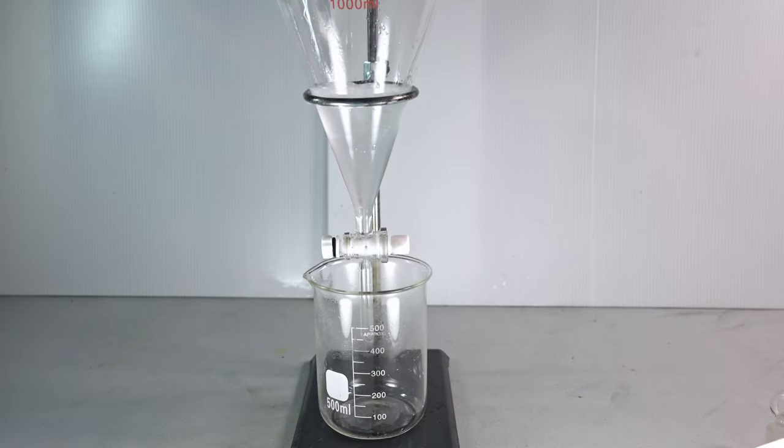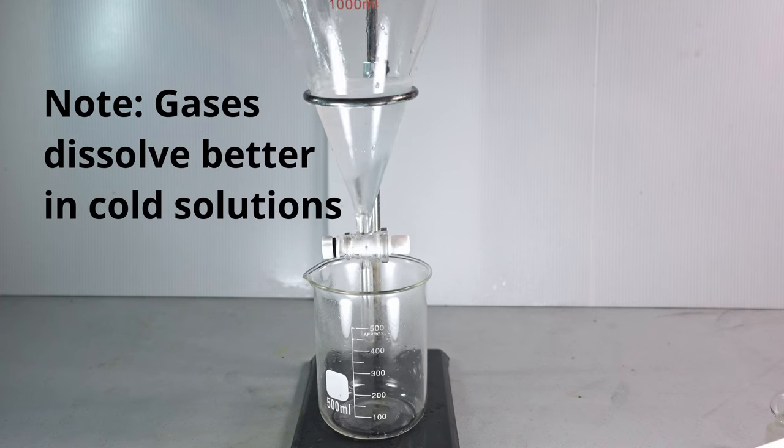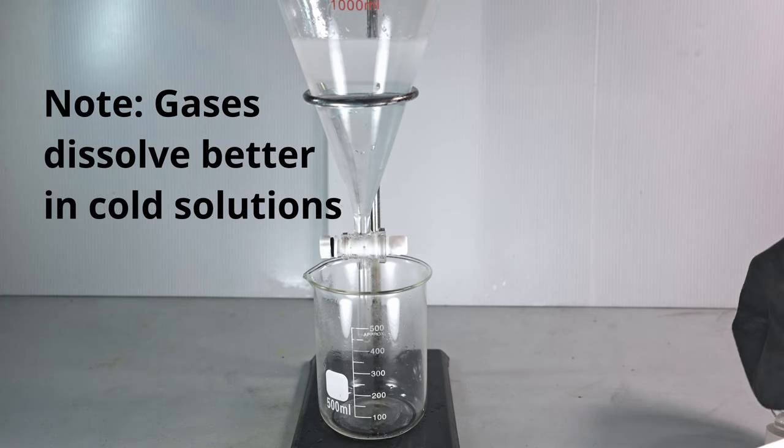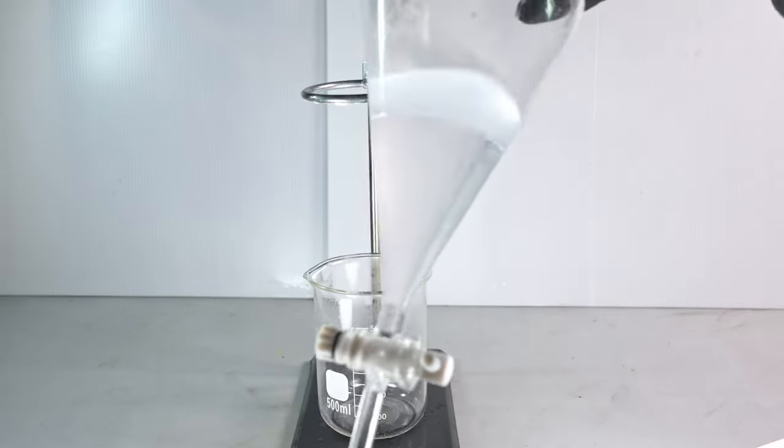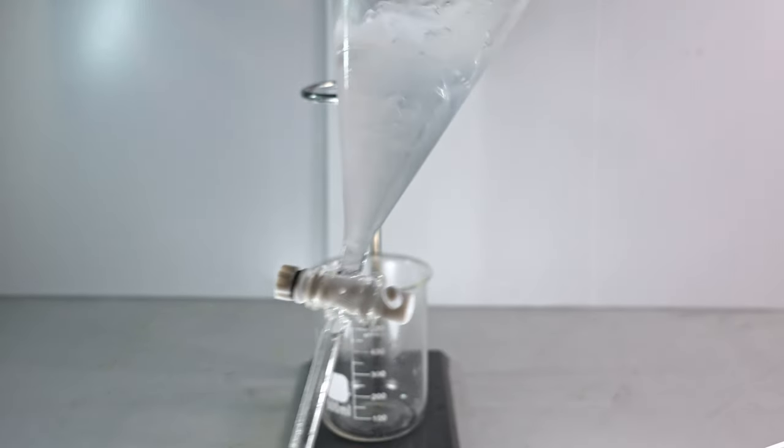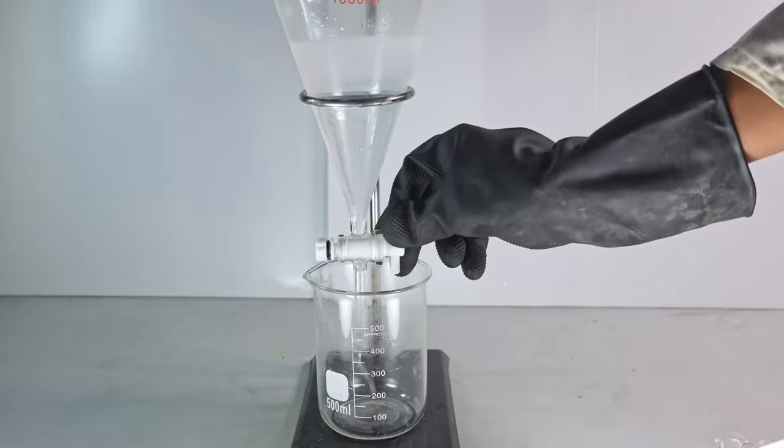The next thing we do is pour in some cold water. Because it's cold, it's going to absorb any extra hydrogen chloride that is dissolved in the solution. Shake it up a little bit and we're going to put it back on and drain.